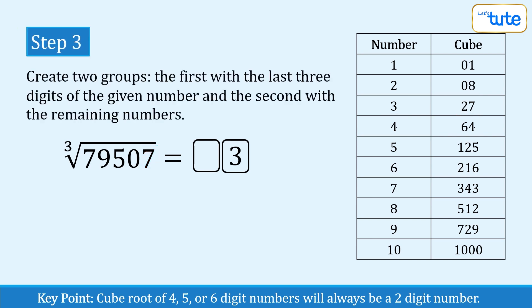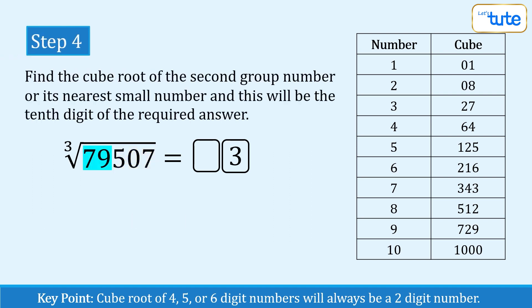Next, we will divide the given number into 2 groups to find the other digit of the answer. The first group is always made up of the first 3 digits from the right side and the remaining numbers are in the second group. Ignore the first group and focus on the second one and this is the last step in finding the cube root.